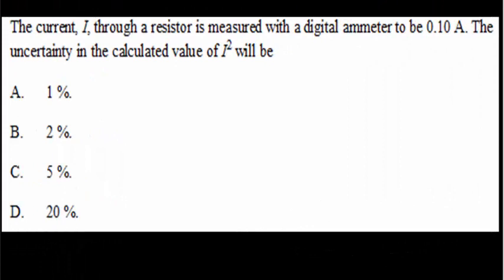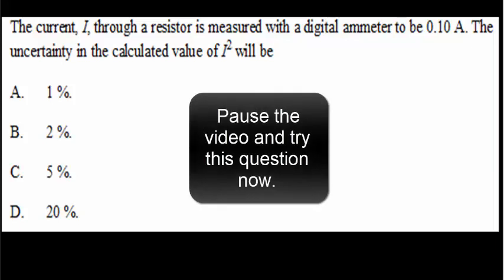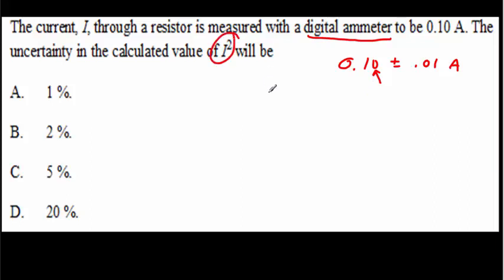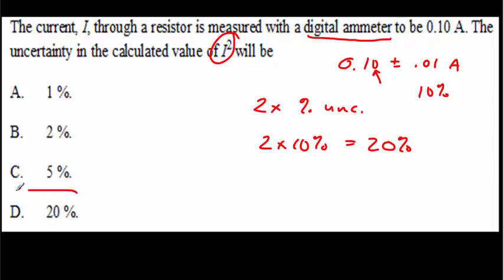I now have a few very typical IB questions on propagating uncertainties. Pause the video, read the question over, try it for yourself, and then come back for the answer. So if this is being read on a digital ammeter, that means it's really 0.10 plus or minus 0.01 amperes — you put a 1 in the smallest digit as your uncertainty on a digital meter. Now if we're squaring, we want to take 2 times the percent uncertainty. Our percent uncertainty here is 10%, so 2 times 10% would be 20%. The correct answer is D.